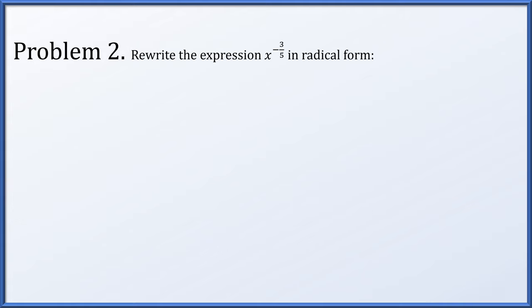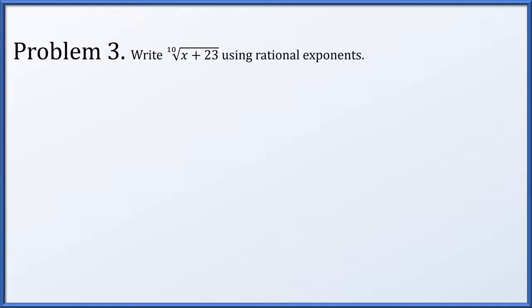In problem 2, rewrite the expression x to the negative 3 fifths in radical form. That exponent negative 3 fifths I'm going to represent as negative 3 times 1 fifth, so that I can write this as x to the negative 3 all raised to the 1 fifth. Now that we have something to the 1 over a power, we can write that as the fifth root of x to the minus 3. In problem 3, let's write the tenth root of x plus 23 using rational exponents — the tenth root of something is simply the 1 over 10 power.